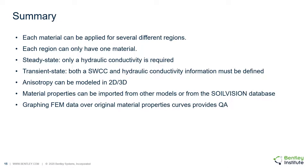In summary, each material can be applied to several different regions, and each region can have only one material. In a steady state numerical model it is only required that the user enter hydraulic conductivity; the only use for entering a soil water characteristic curve is to plot the volumetric water content at any point in the model. In a transient model both a soil water characteristic curve and hydraulic conductivity information must be defined. Anisotropy can be modeled in 2D and 3D. Material properties can be imported from other numerical models or from the SoilVision database. Graphing finite element data over original material properties provides assurance that the nonlinear partial differential equations are being properly solved.